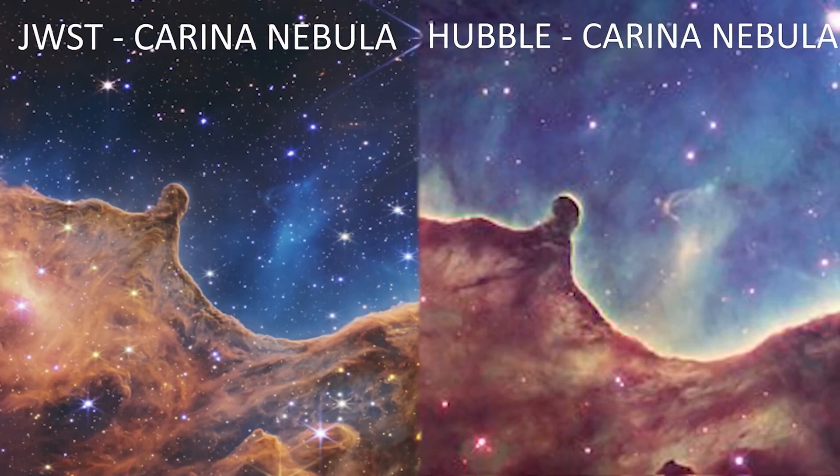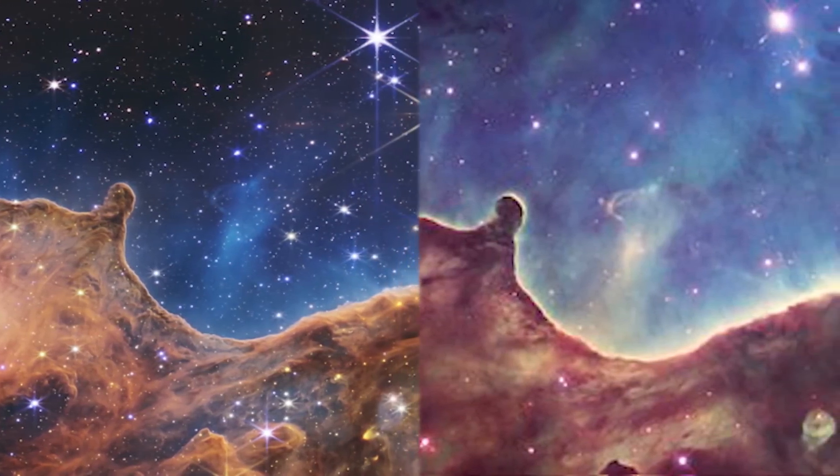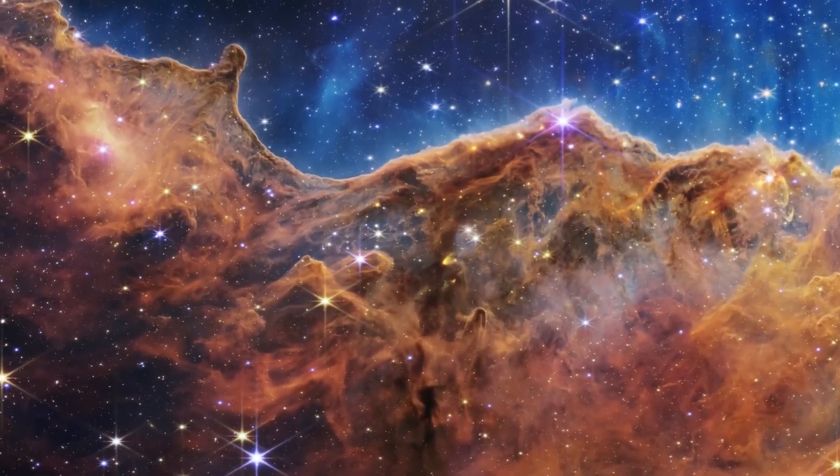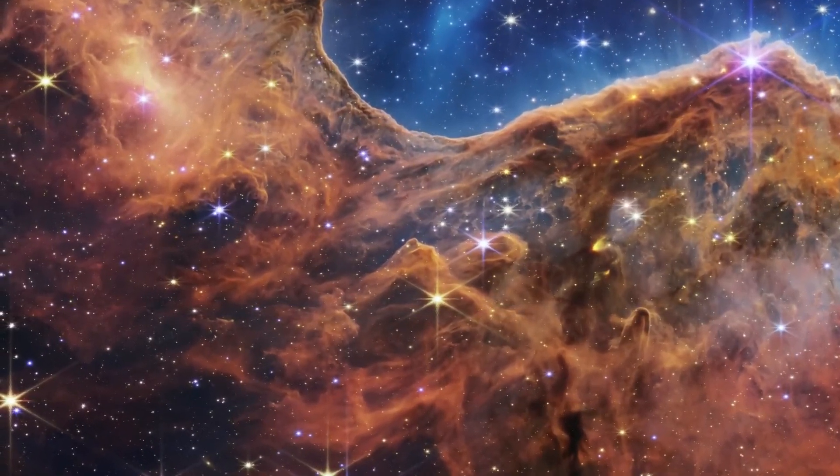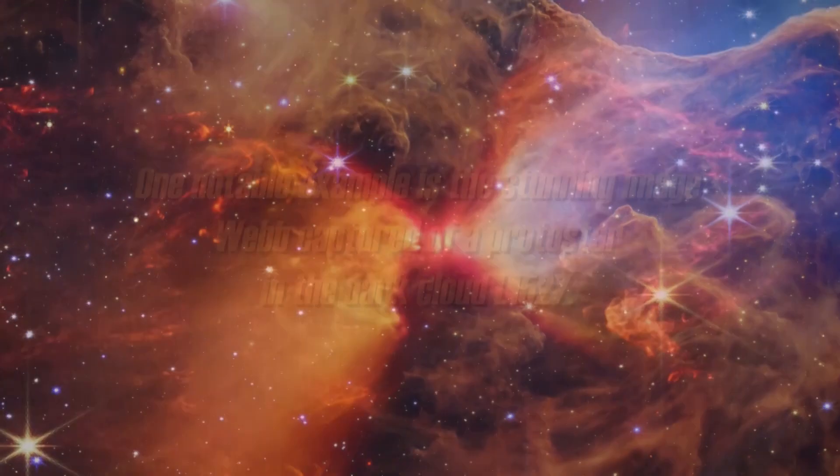By comparing the images captured by Hubble and the James Webb telescope, we can discover how many bright secrets were hidden behind the dense clouds of gas and dust. In fact, many of the objects captured by Webb in the infrared spectrum were completely invisible in the earlier images.